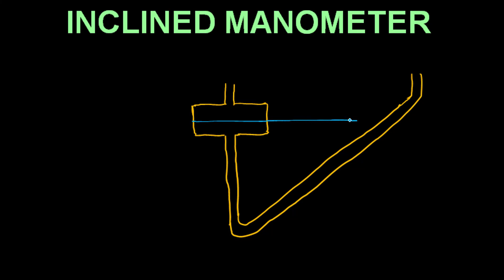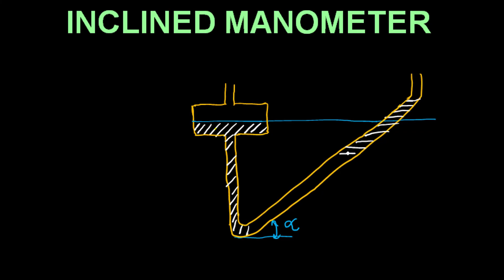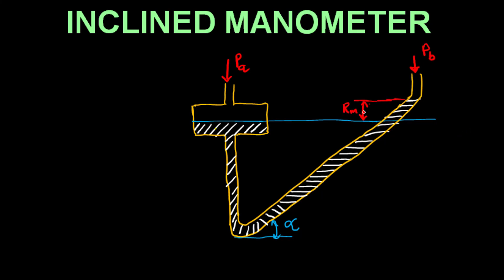So first of all, what is inclined manometer? Inclined manometer is a kind of differential manometer which is being used for measuring the small pressure difference. If the pressure difference is very small, then in this case we will use the inclined manometer.